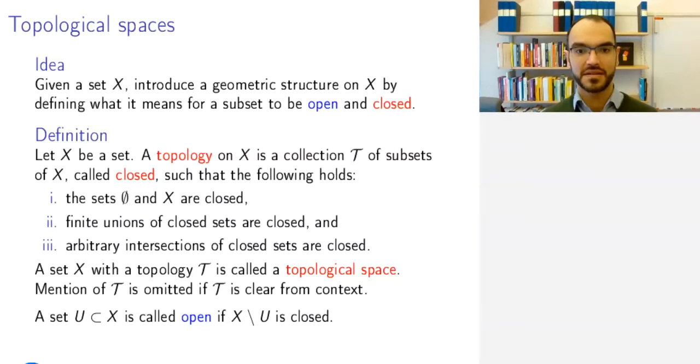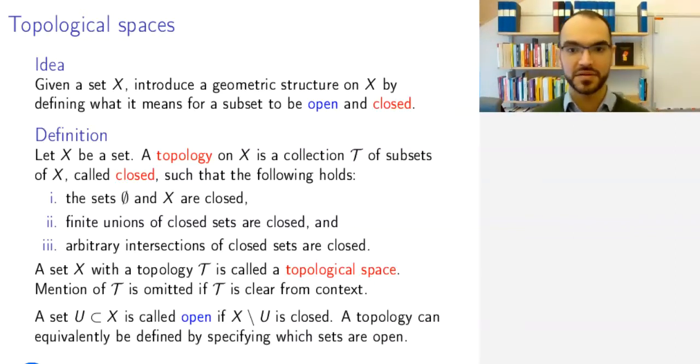An open set is a set such that the complement is closed. Topologies can and usually are defined equivalently by specifying which sets are open rather than specifying which sets are closed, and then you dualize these axioms. The point is that a topological space is a set with a clear declaration of which subsets are closed and which subsets are open.